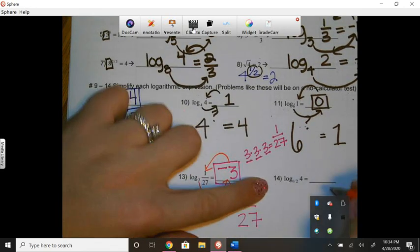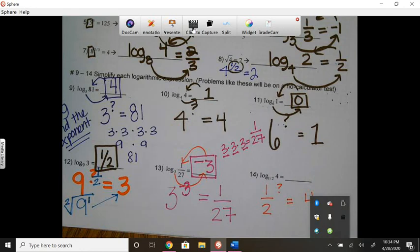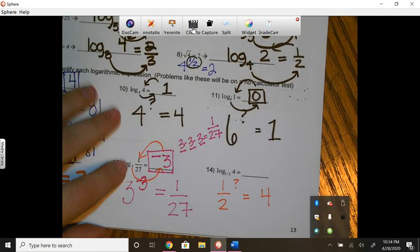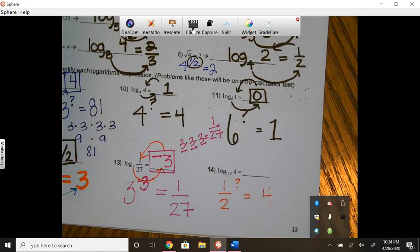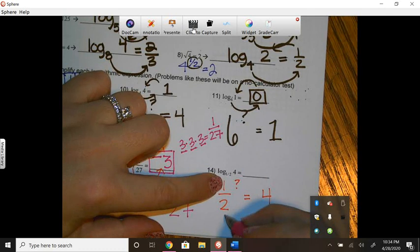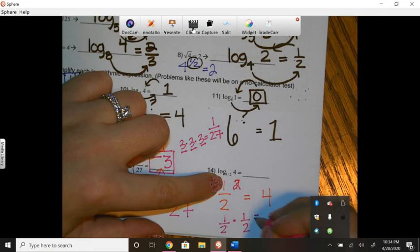Okay, let's check this one here. 1 half to what power is equal to 4? So 1 half to what power is equal to 4? So first of all, if we do 1 half times 1 half, so if the exponent was 2, that would make 1 fourth. 1 times 1 is 1, 2 times 2 is 4.